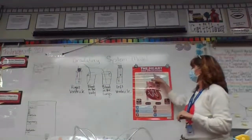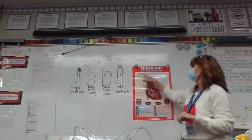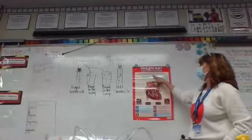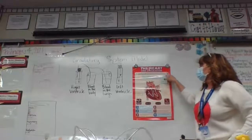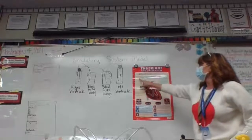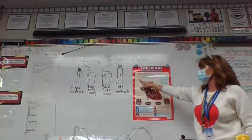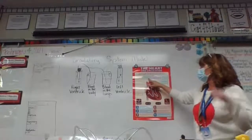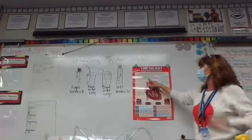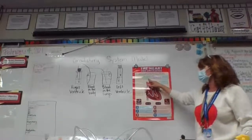The heart is an organ that pumps blood around the body to deliver oxygen and nutrients, and to remove waste including carbon dioxide. Veins carry blood to the heart from other organs.